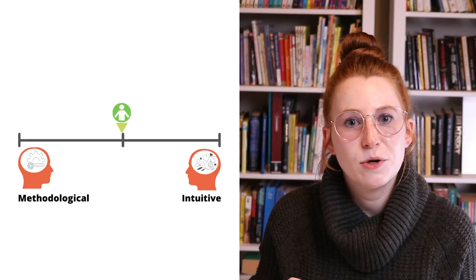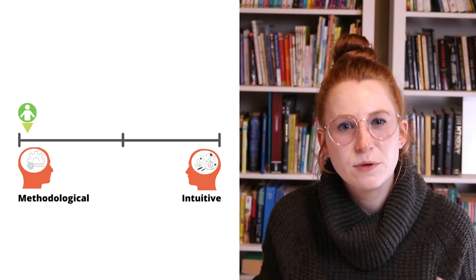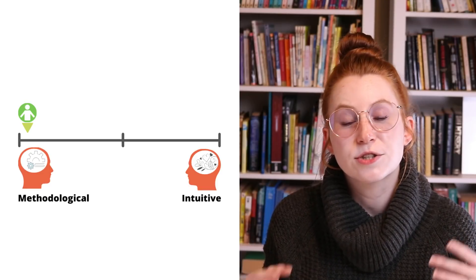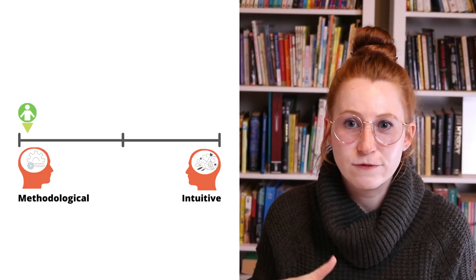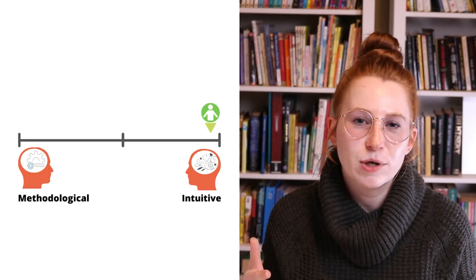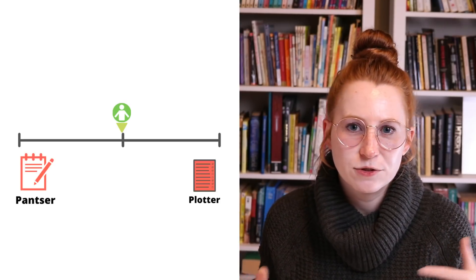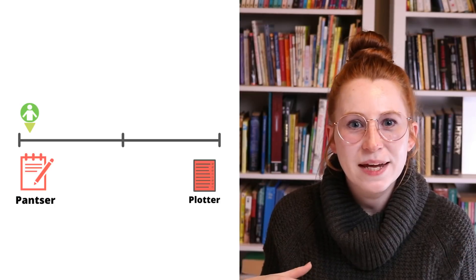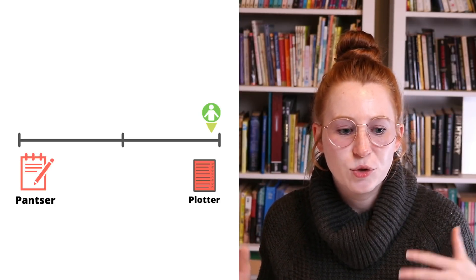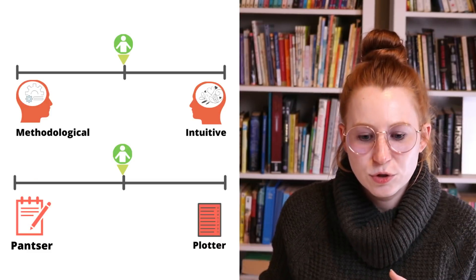If you've already seen that video or you just want a quick overview, the basics of the four writing types is that it's built on two continuums. The first continuum is methodological to intuitive — methodological being writers who use systems, theories, processes, things like story structure and scene structure in order to craft their novels. And intuitive being writers who use their gut feelings or intuition, who feel out the process rather than using specific systems. The other continuum is pantser to plotter.